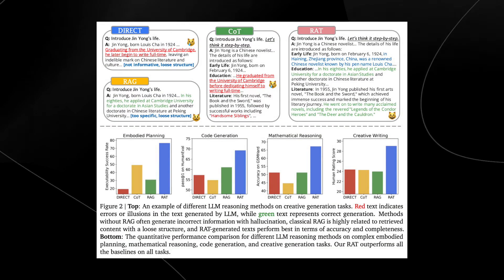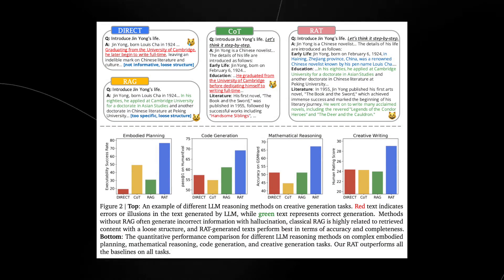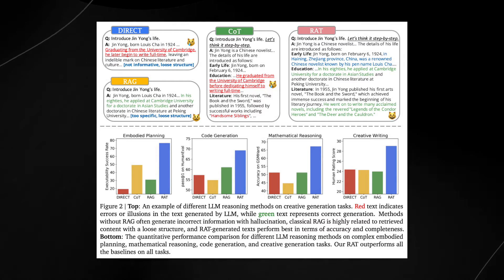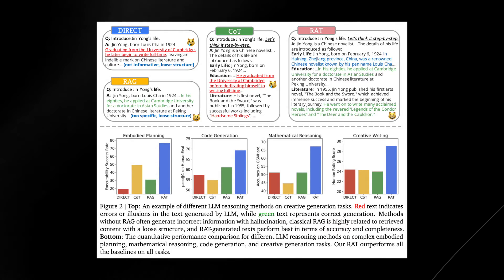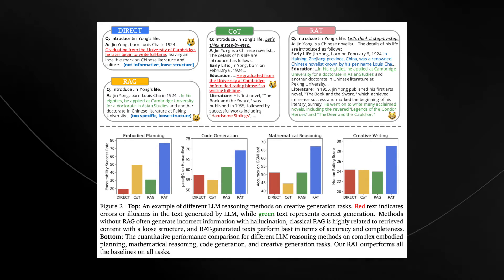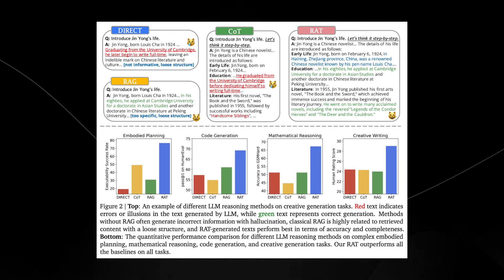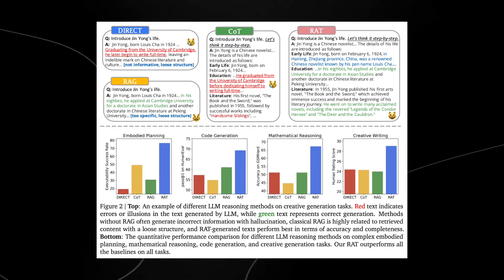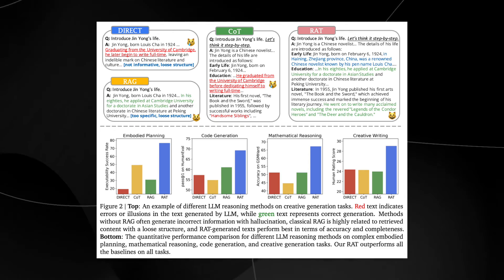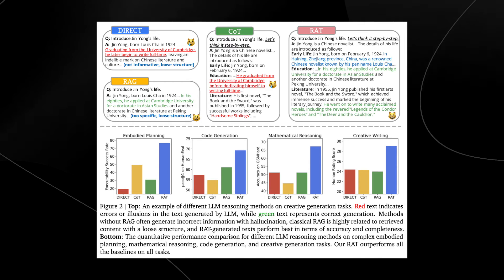Let's look at a real example. When tasked with writing a story, an AI without RAT might mix up facts or miss the emotional depth. With RAT, the same AI crafts a narrative with accurate details and rich, engaging content almost indistinguishable from human writing.